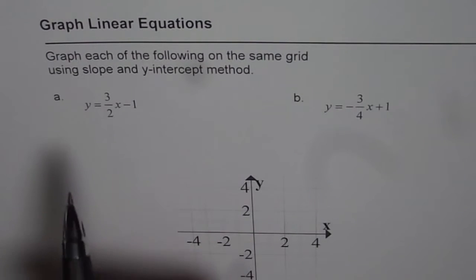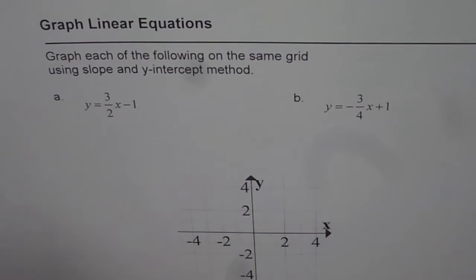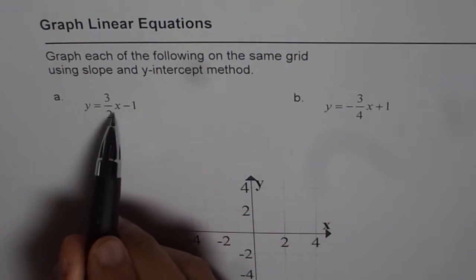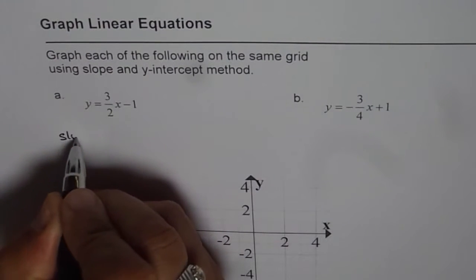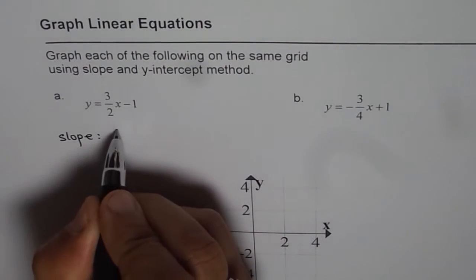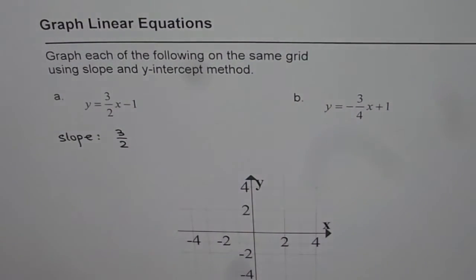Let's start with part A. Part B is for you to practice. We have y equals 3 over 2x minus 1. What is the slope? Slope of this line is 3 over 2. The coefficient of x is the slope.